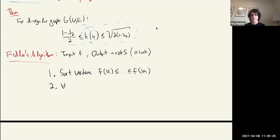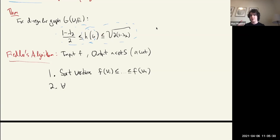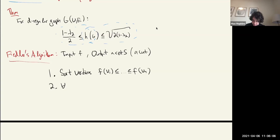I'm going to give a slightly different version today that matches the notes a little better. For all i from 1 through n, we compute the expansion of the cut Sᵢ, defined as Sᵢ = {Vᵢ through Vₙ}. Last time I defined this as V₁ through Vᵢ; I'm flipping this to match the notes.